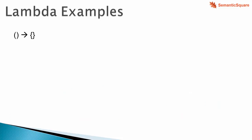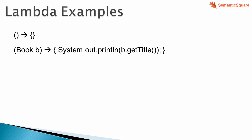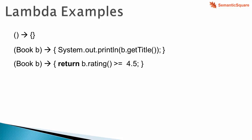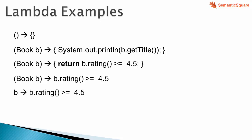Now let's look at a few lambda examples. The first one simply represents a method that takes no parameters and returns void. The next represents a method in a functional interface that takes a Book instance and prints the title — the return type is also void. In the third example, a Book serves as input and a boolean is returned if the book's rating is greater than or equal to 4.5. Here is the simplified representation where the body is just an expression, so no braces, return keyword, or ending semicolon.